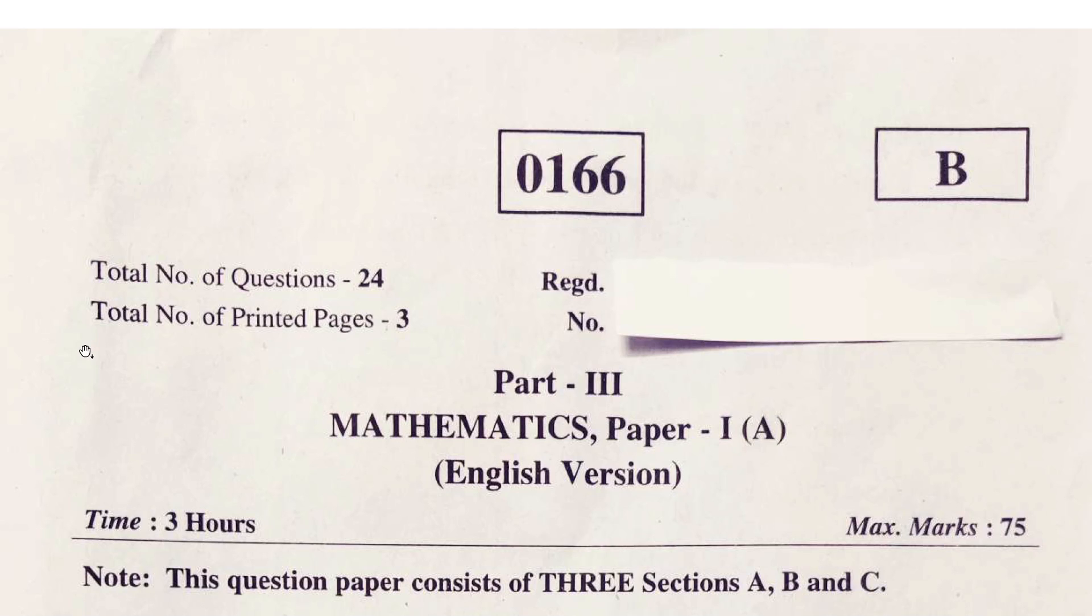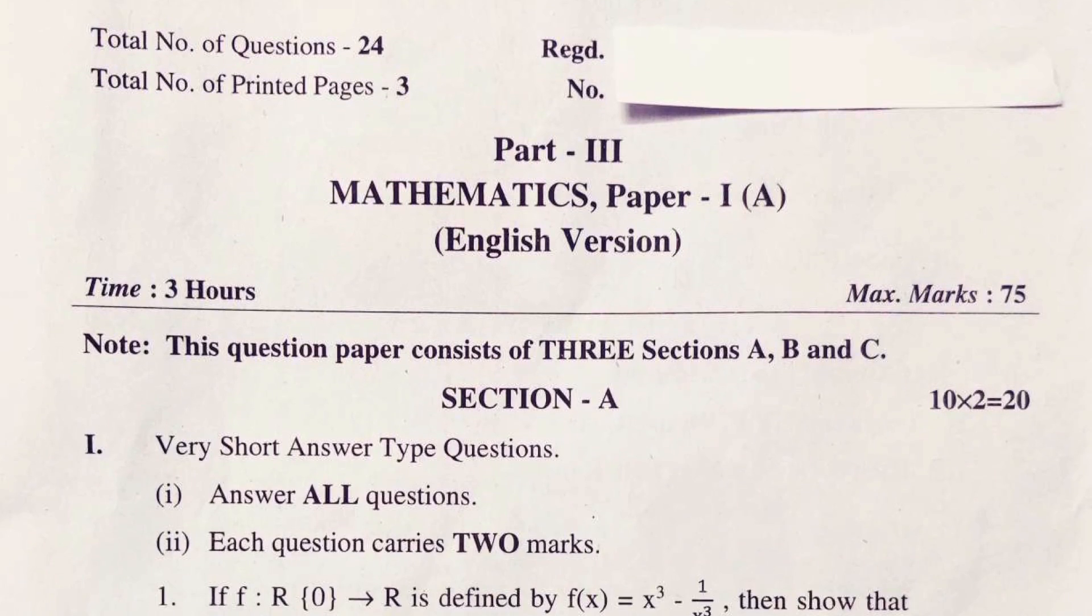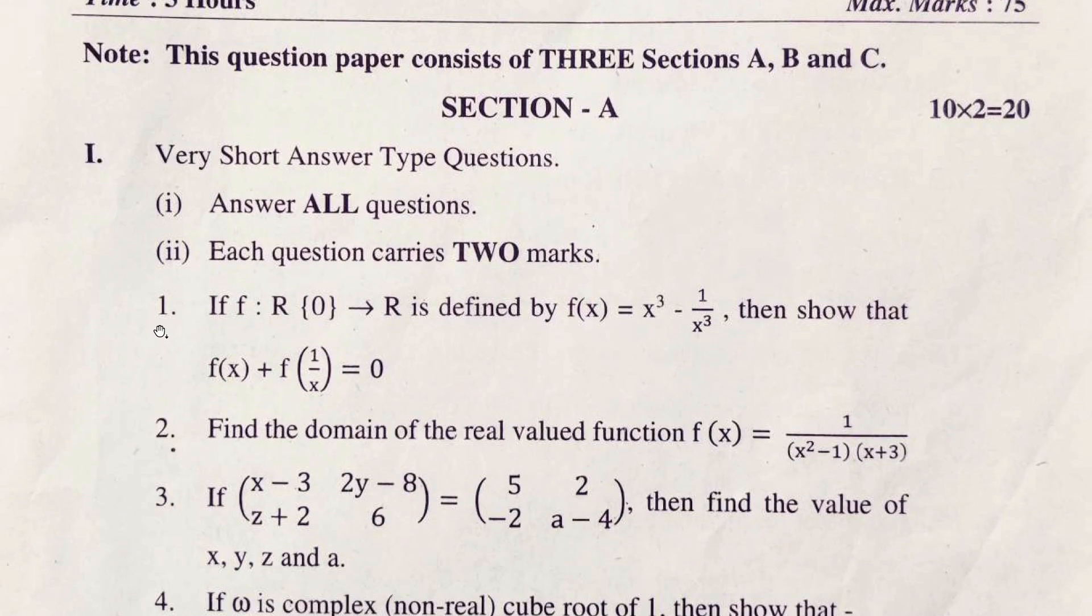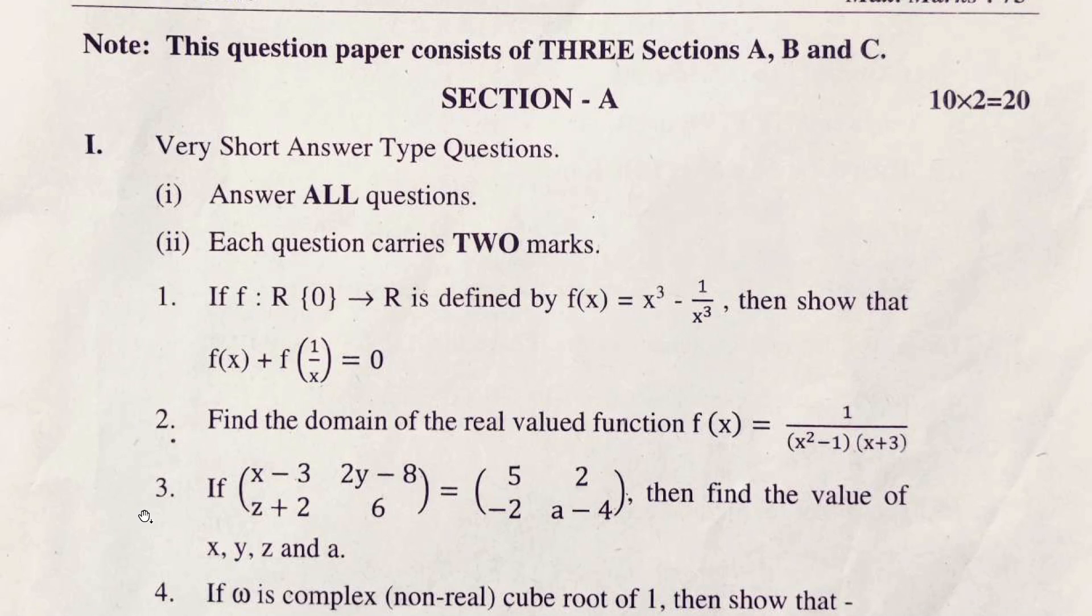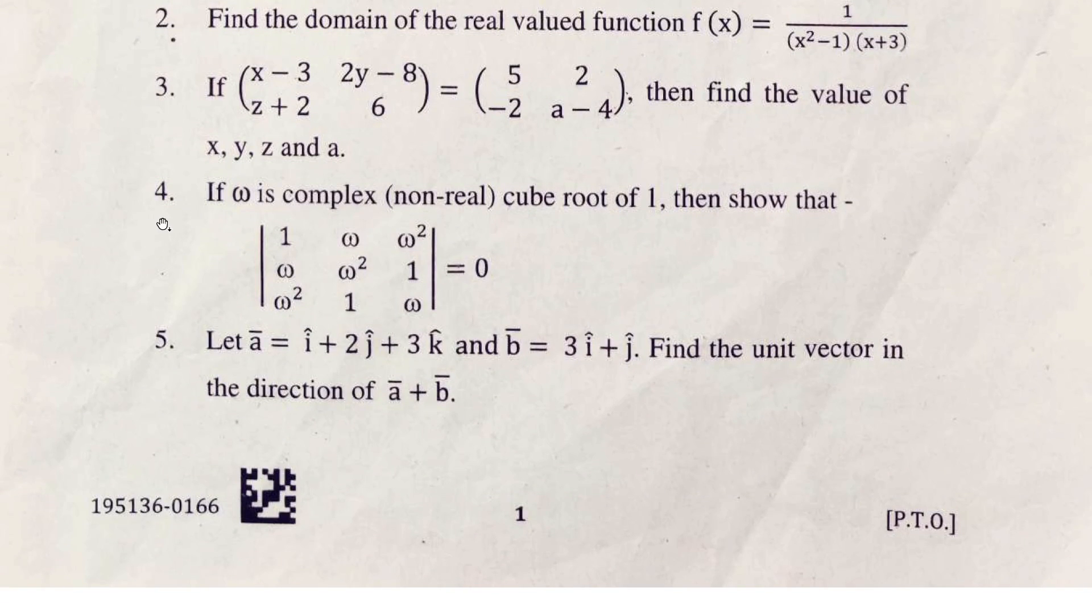Set B paper was given. This is Section A: first question, second question, third question, fourth question, fifth question.